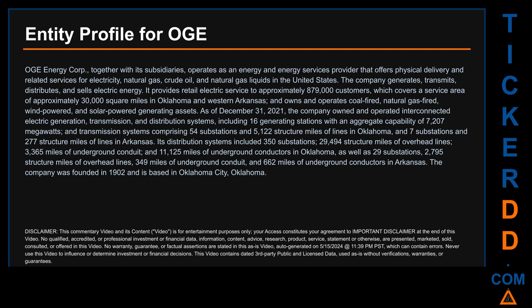Its distribution systems included 350 substations, 29,494 structure miles of overhead lines, 3,365 miles of underground conduit, and 11,125 miles of underground conductors in Oklahoma, as well as 29 substations, 2,795 structure miles of overhead lines, 349 miles of underground conduit, and 662 miles of underground conductors in Arkansas.